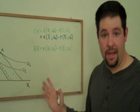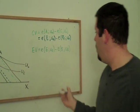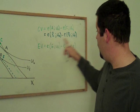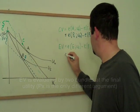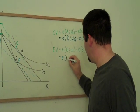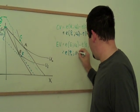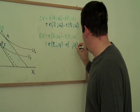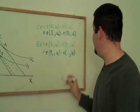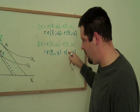We can also do this with the equivalent variation. Remember, bundle E has the original prices. So this is the expenditure function at the original prices and final utility. We've got the expenditure function. Again, it's at final utility. But it's also at bundle B, which is the new prices.